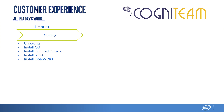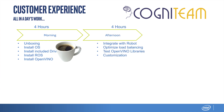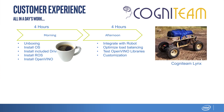Basically, in the morning, they unboxed the board, installed the OS, installed the included drivers, installed ROS, and installed OpenVINO. That was half the work — a slow morning, so bring your coffee. Then in the afternoon, in four hours, they were able to integrate this kit with the robot I showed on the previous slide. They optimized the load balancing on the hardware, tested and ran some of the open source OpenVINO libraries, and then added their own customization on top of that. In a single day, they went from unboxing the board to fully incorporating it into their robot with full navigation.